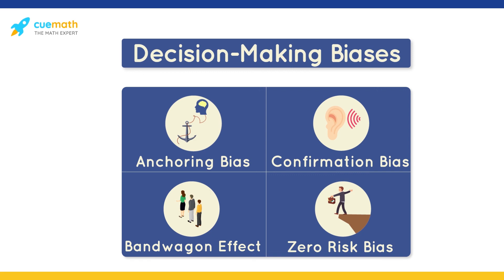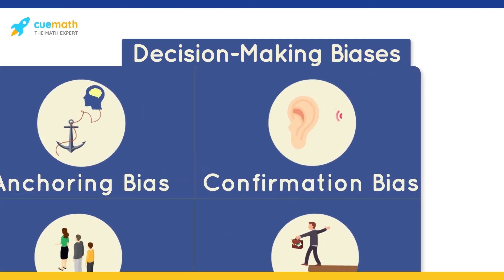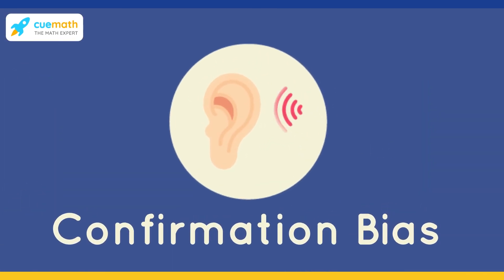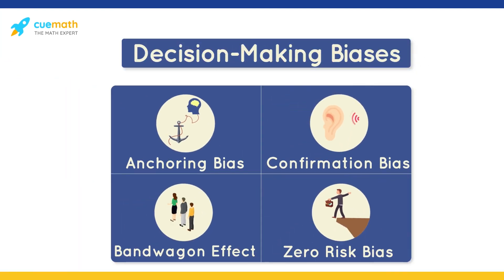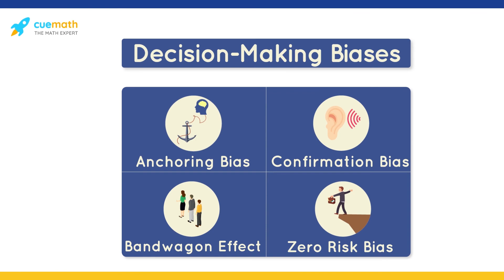Peter's thought process shows a confirmation bias. He selectively looked at the data about his lost pencil box, which confirmed his preconceived notions about Eva. In our session, we will learn more about these biases.